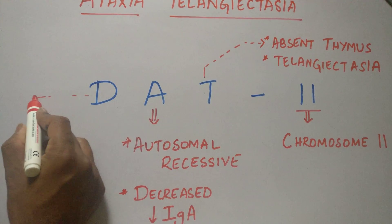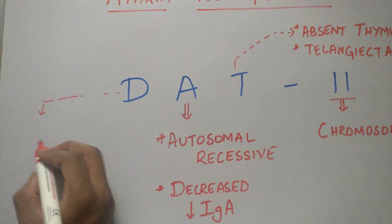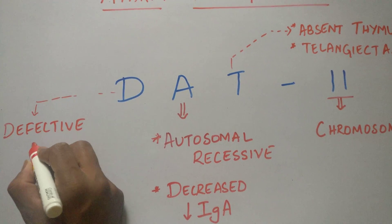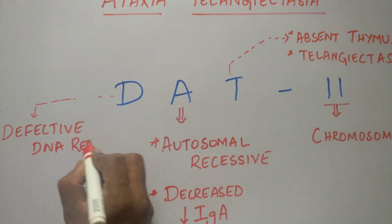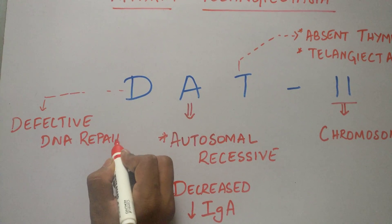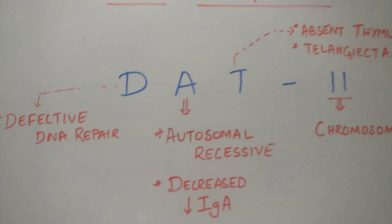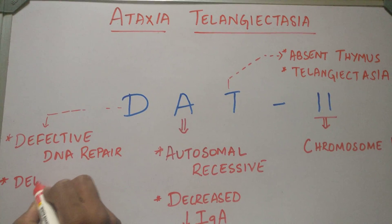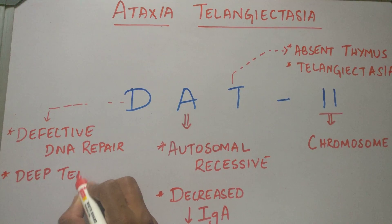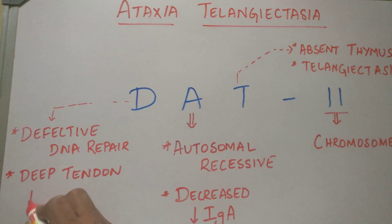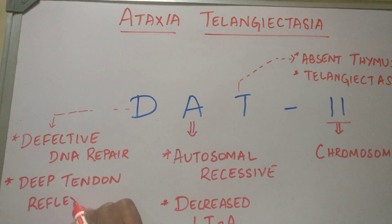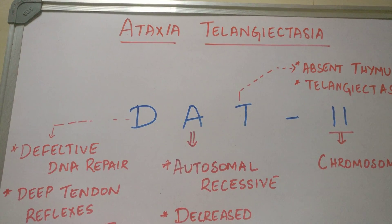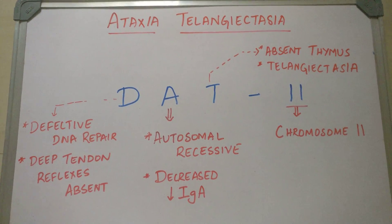The last one is D. D stands for defective DNA repair. So I want you guys to remember that in Ataxia Telangiectasia there is defective DNA repair. One more thing: D also stands for deep tendon reflexes, which are absent in Ataxia Telangiectasia.